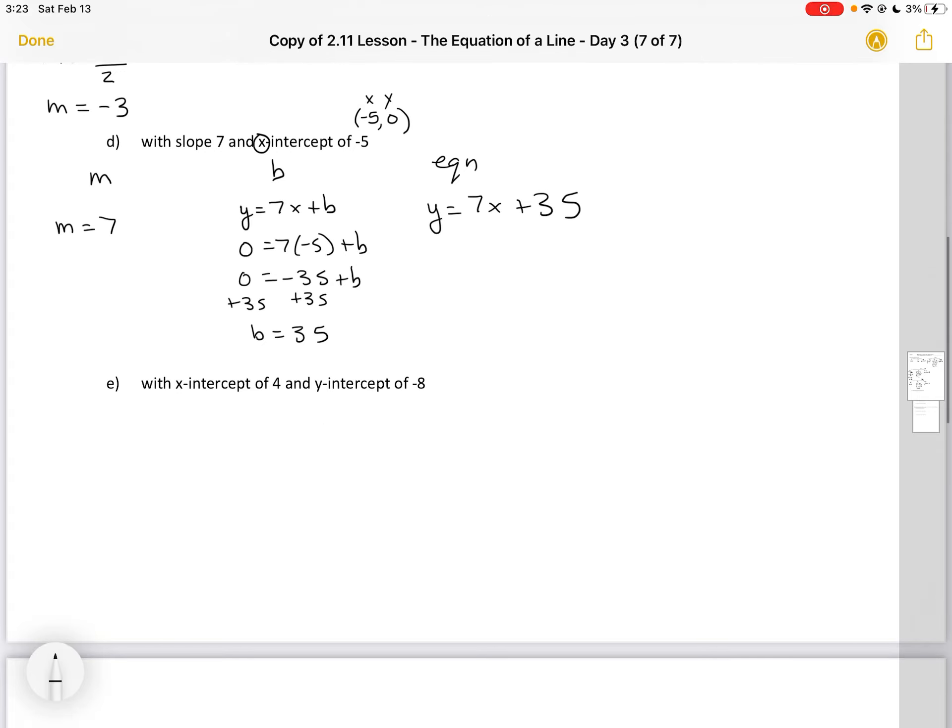Finally, I'm given my x-intercept of 4. Just like in example D, I know that those coordinates are 4 and 0. And I'm also given my y-intercept of minus 8, so that actually tells me what my b value is. I also know that that point is going to be 0 minus 8 because it's where it crosses the y-axis. So the x value has to be 0.